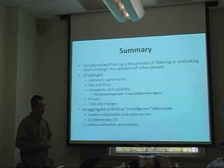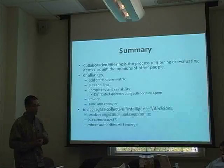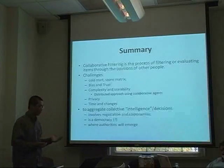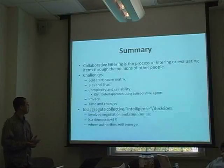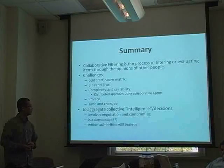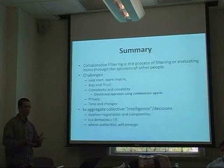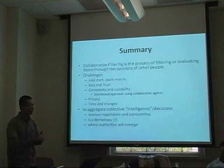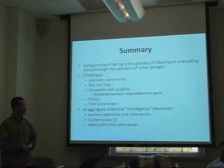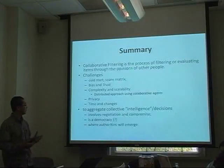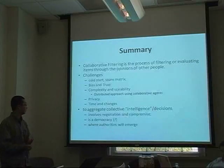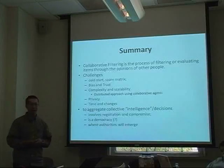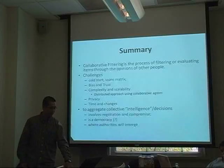Collaborative filtering is a process of filtering or evaluating items through the opinions of other people. Many challenges remain, such as cold start, sparse matrices, bias and trust, complexity and scalability — which has motivated the proposal of distributed approaches to collaborative filtering — as well as the issues of privacy and change over time. The idea of collective intelligence or decision-making is broader than collaborative filtering itself, involving negotiation and compromise, and raises the question of whether it is a democracy where authorities can emerge through voting.